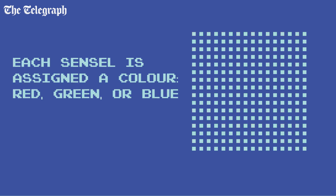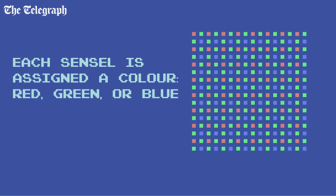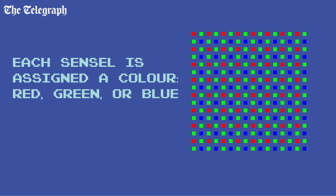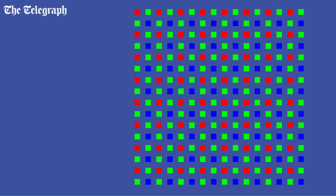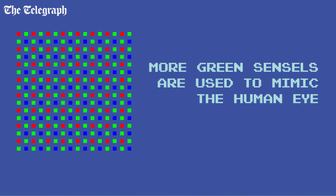To determine colour, every sensil is given a colour filter which isolates light at a particular frequency — either red, green or blue. These filters are arranged in a pattern known as a Bayer filter mosaic, normally with twice as many green cells as there are blue and red. This mimics the human eye, which is most sensitive to green light.